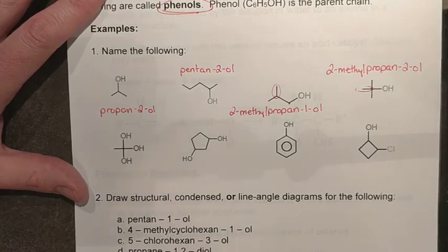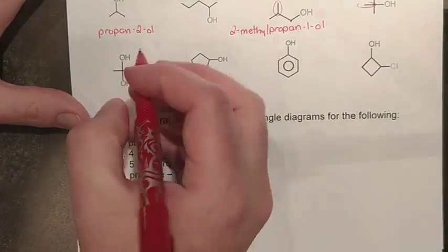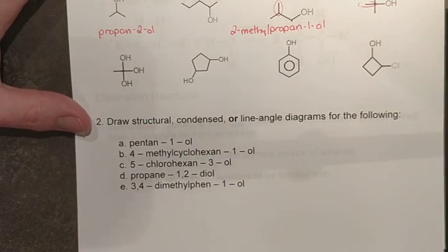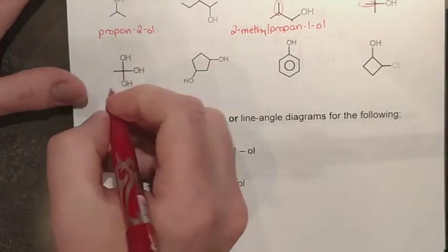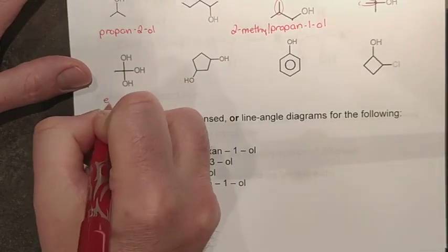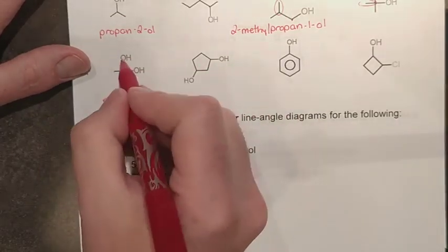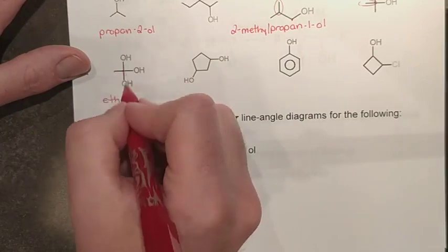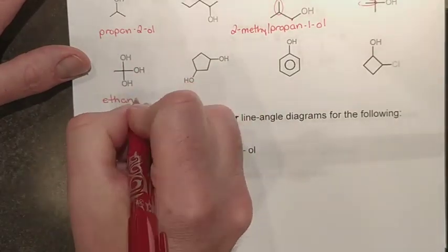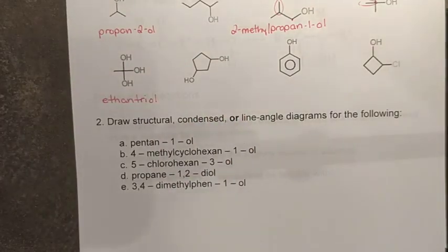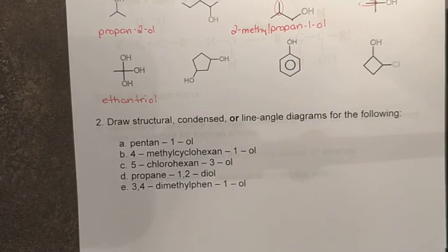Try pausing and attempting the remaining examples yourself. In this next one I can see two carbons - remember, if a different letter is shown, that indicates no carbon there. Two carbons is 'eth', single bonded so ethane. I can see three hydroxyl groups, all on carbon one, so this is ethaneTRIOL. If those hydroxyl groups were spread across carbons one and two, I would include the numbers to specify their positions.